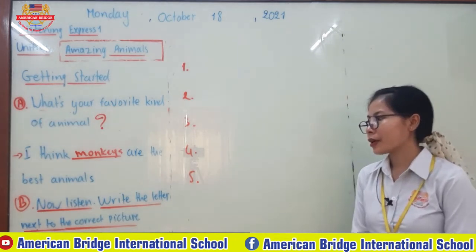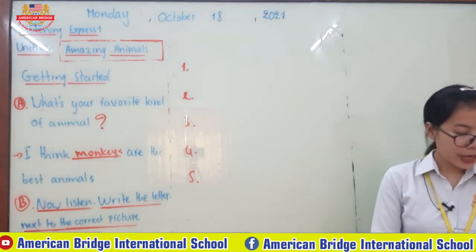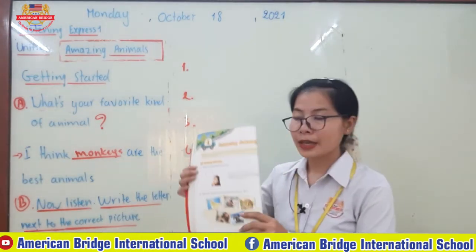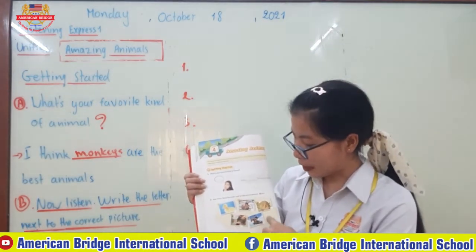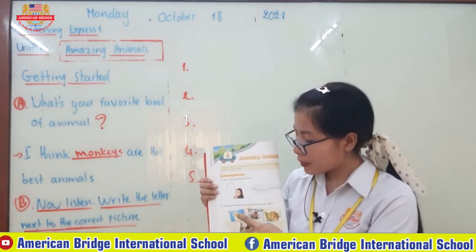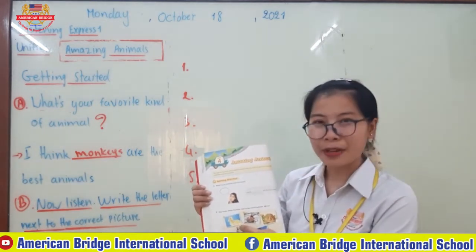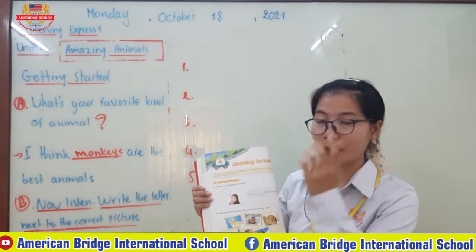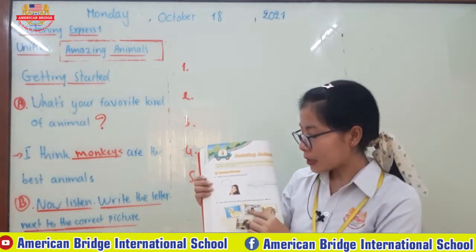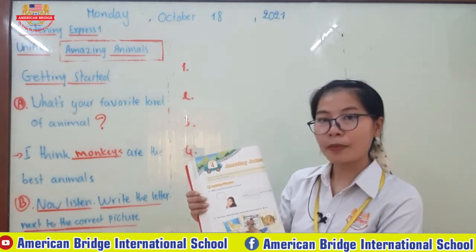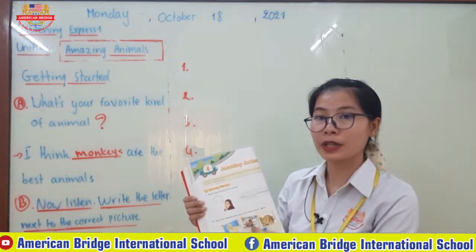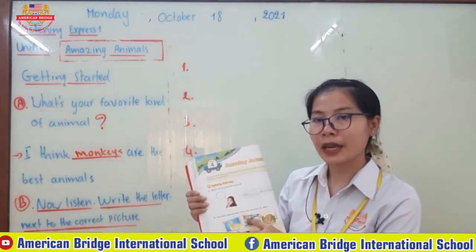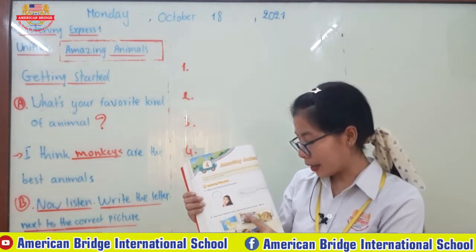Now let's go to Part B: Listen and write the letter next to the correct picture. You have to write the letter that goes with each picture. There are five pictures. The first picture is a duck, the second is a hippo or hippopotamus.